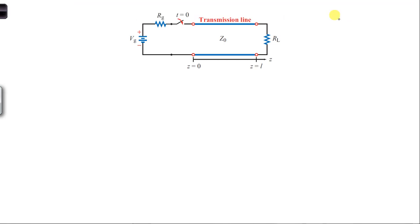In part B of this problem, we want to draw the current along the transmission line versus distance z at time t equal 5T over 2, which of course is equal to 2.5 capital T.